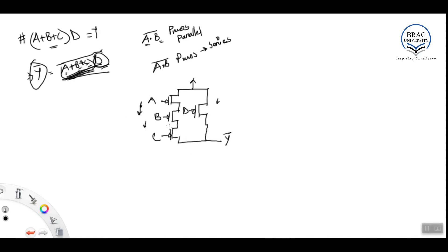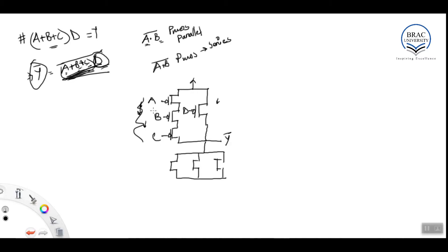So our pull-up network works perfectly. Now we have to design the pull-down network. In the pull-down network it is the opposite: these three series PMOS elements become parallel NMOS elements, and the whole thing will be in series with d, since d was parallel in the pull-up network.